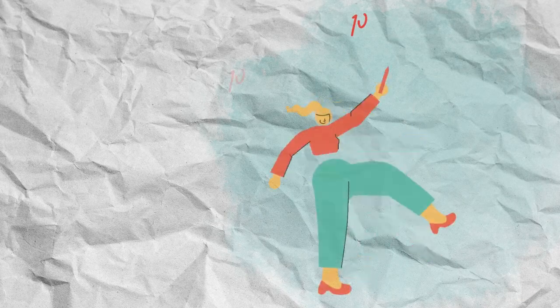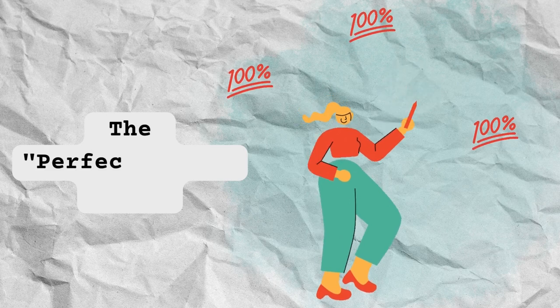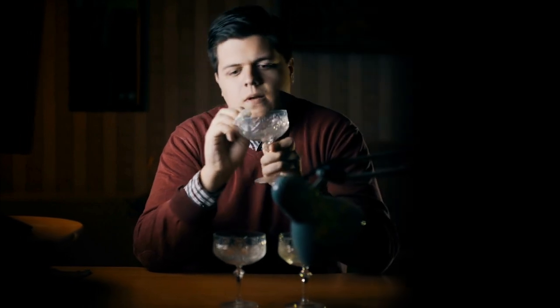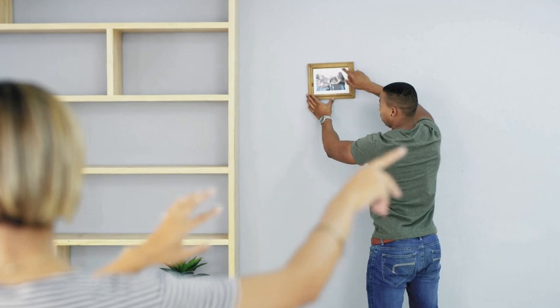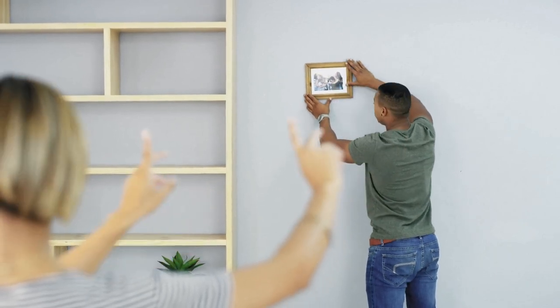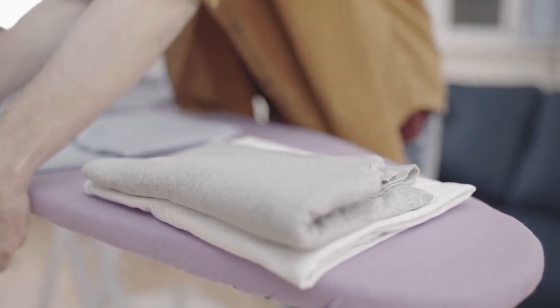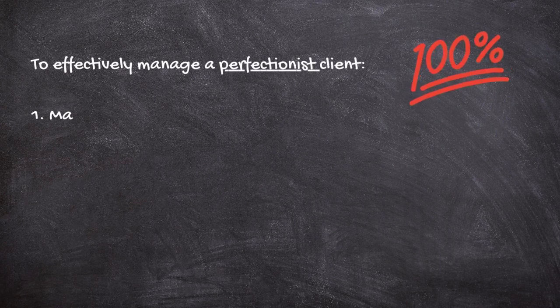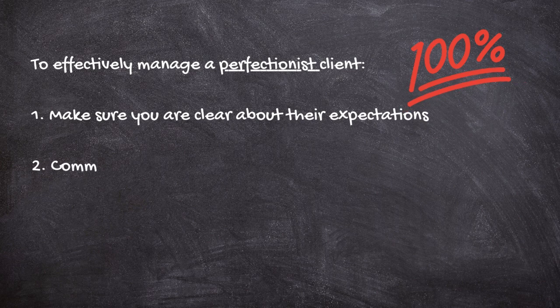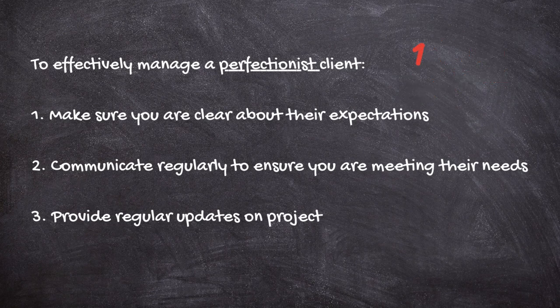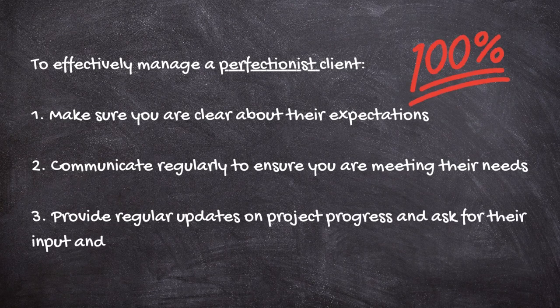The first type of client is the perfectionist. These clients tend to be very detail-oriented and expect a high level of quality from your team. While this can be challenging at times, it's important to remember that their expectations come from a desire to produce the best possible outcome. To effectively manage a perfectionist client, make sure you are clear about their expectations and communicate regularly. You may also want to provide regular updates on project progress and ask for their input and feedback along the way.